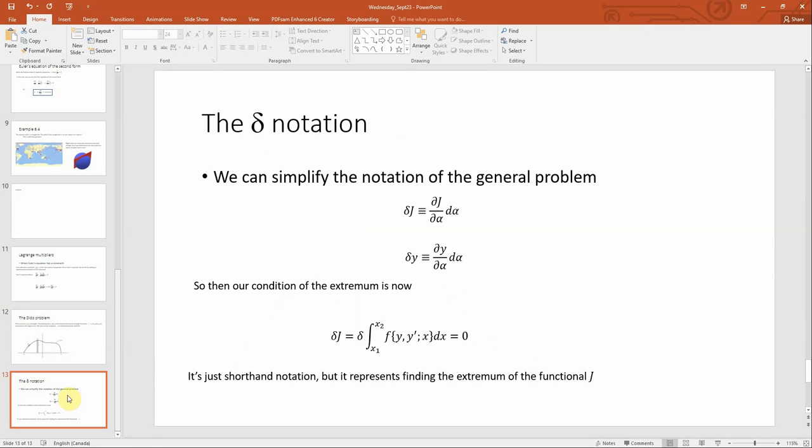We'll complete the lecture by talking about the delta notation. We can simplify this notation with delta notation. We define delta of j as the partial derivative of j with respect to alpha multiplied by differential alpha. Same with delta y equals dy/d alpha times d alpha. So the condition for our extremum now is delta j equals delta of the integral from x1 to x2 of our function, integrating over dx. It's simply shorthand representing finding the extremum of the functional.